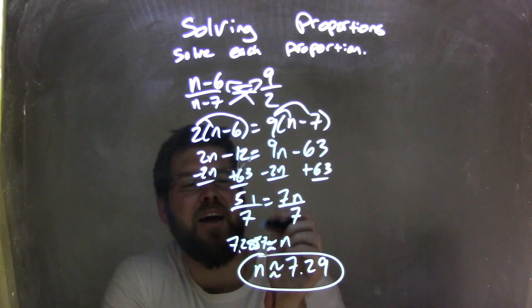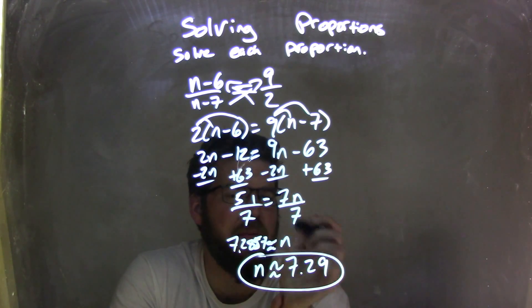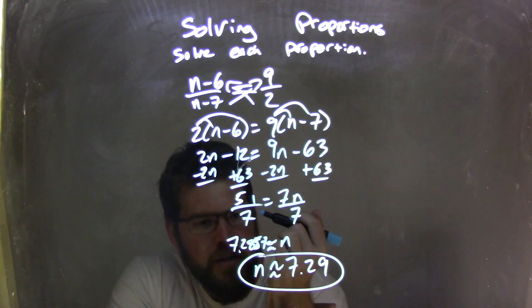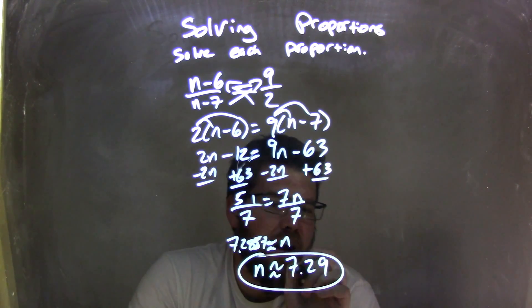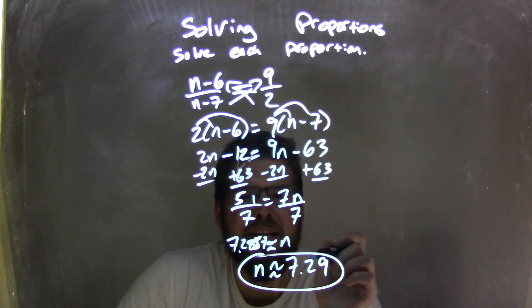I then divided by 7 on both sides and got approximately 7.2857, which is approximately equal to n. I rewrote that and rounded to the nearest hundredth here. So I had n equals approximately 7.29.